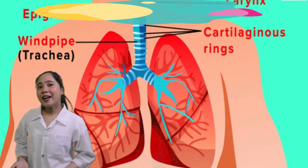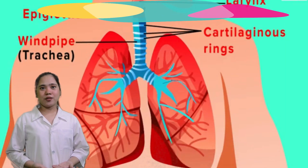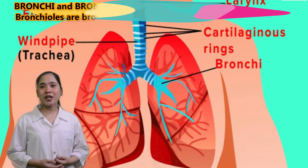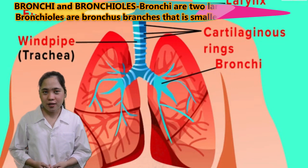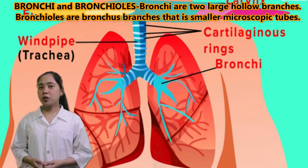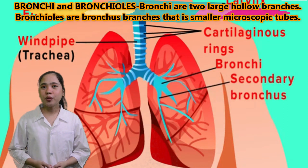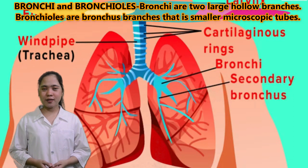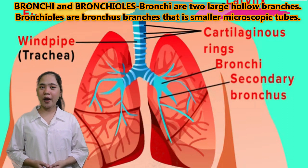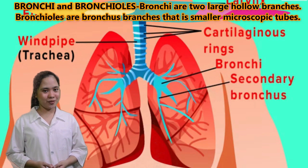Bronchi and bronchioles. Bronchi are two large hollow branches. Bronchioles are bronchus branches that are smaller microscopic tubes.